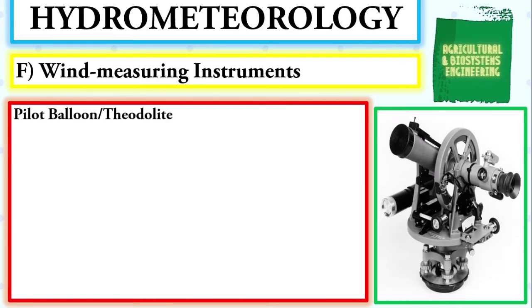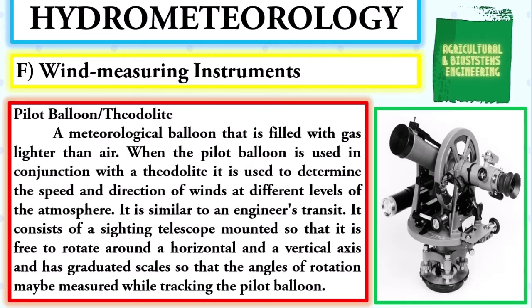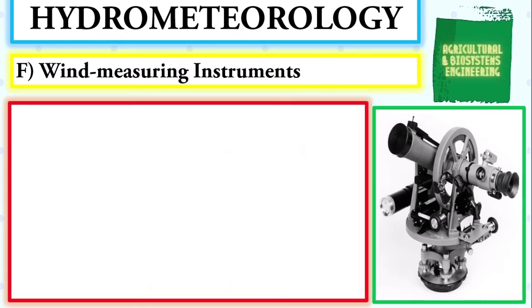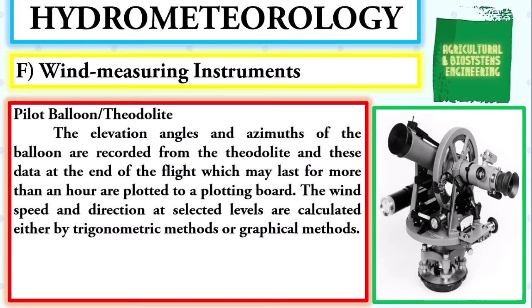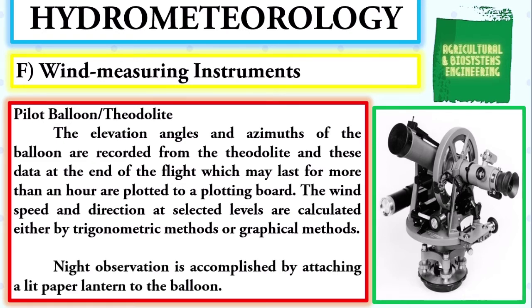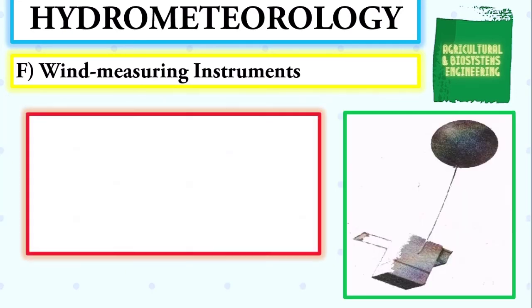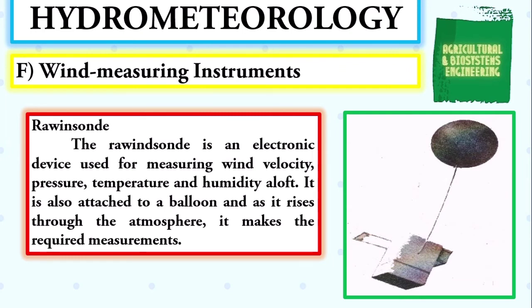Next, we proceed with the instruments used to measure atmospheric wind. We begin with the pilot balloon used in conjunction with the theodolite to determine the speed and direction of winds at different levels of the atmosphere. The theodolite consists of a sighting telescope free to rotate around horizontal and vertical axes, with graduated scales to measure angles of rotation. While tracking the pilot balloon, elevation angles and azimuths are recorded and plotted on a plotting board. Wind speed and direction at selected levels are calculated by trigonometric or graphical methods. Night observation is accomplished by attaching a lit paper lantern to the balloon.